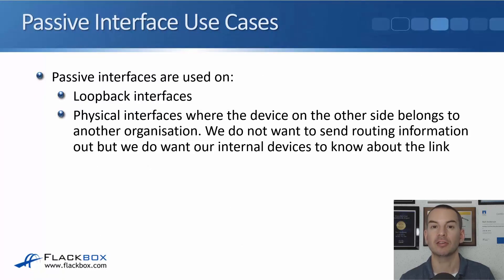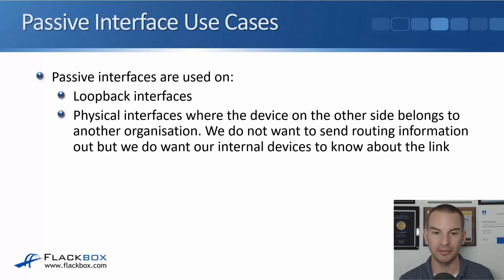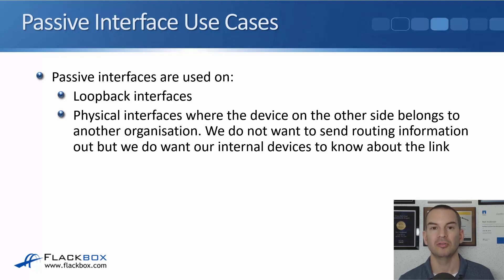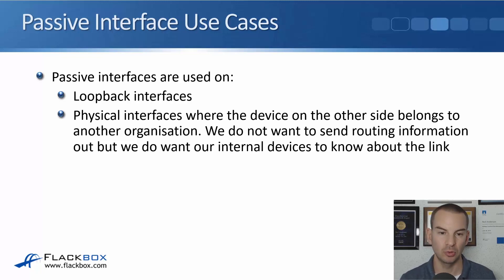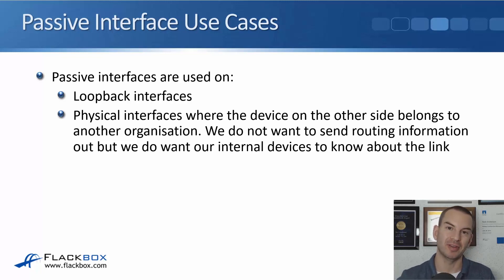To summarize, the use cases for passive interfaces are: loopback interfaces, and physical interfaces where the device on the other side belongs to another organization or is a device we don't want to send routing information to, but we do want our internal devices to know about that link.